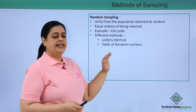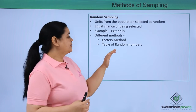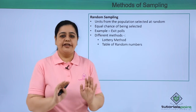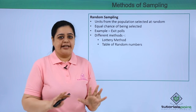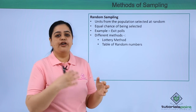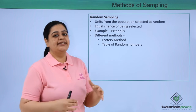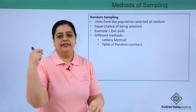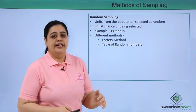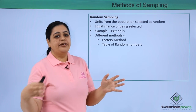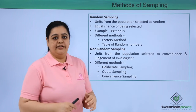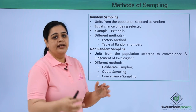Different methods under random sampling include the lottery method and the table of random numbers. In the lottery method, if the entire population is 10 and I want a sample of 3, I simply pick 3 out of those 10. In the table of random numbers method, a random number is assigned to each unit, and based on that, the sample is collected for the survey.